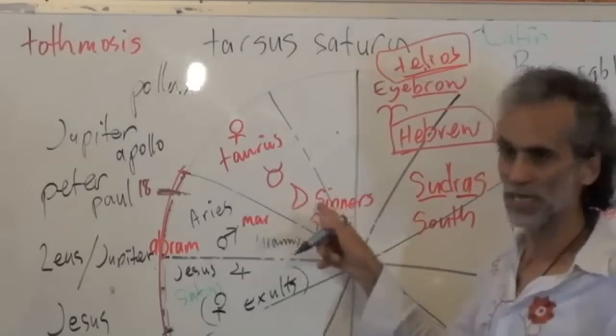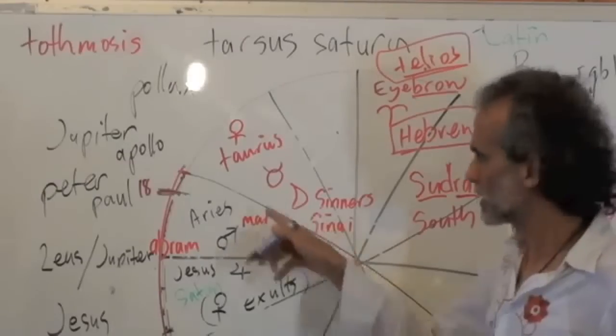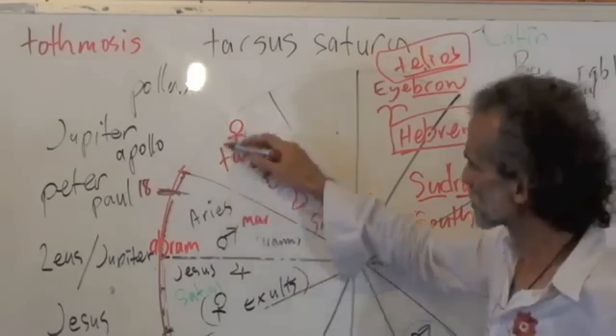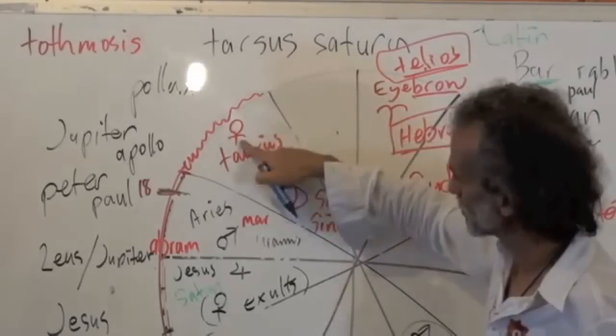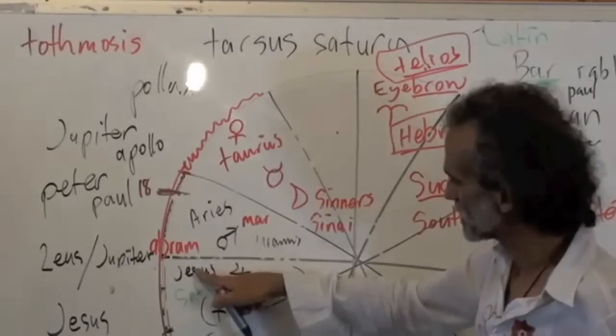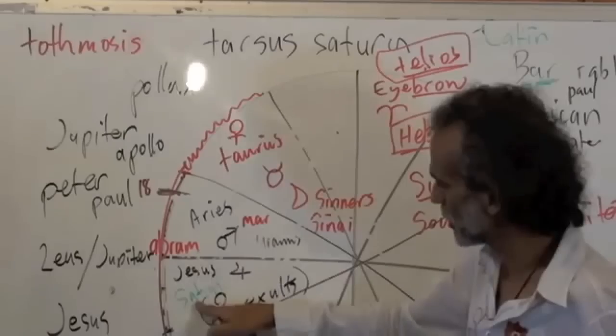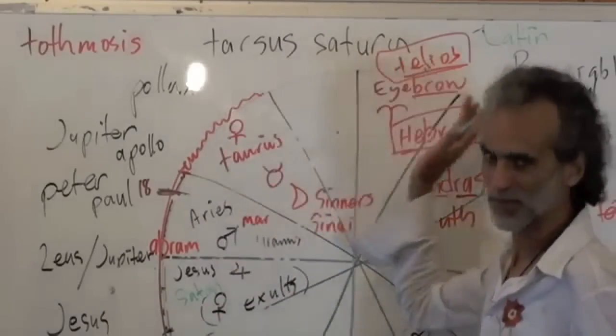And that would have been, well, Hathor. See, Egypt was, Hathor was very popular here. This is Hathor. You've got Abraham, Moses, Jesus, Peter and Paul, and Muhammad. Now you can go back and you can find them all.